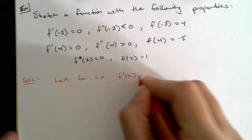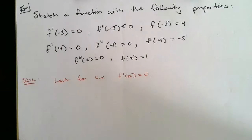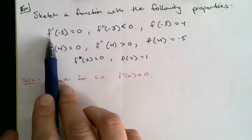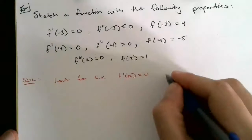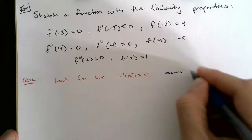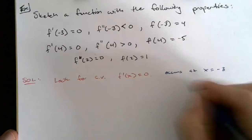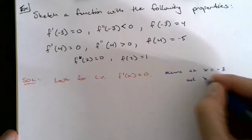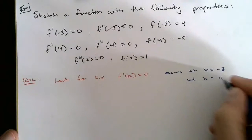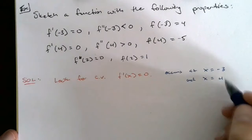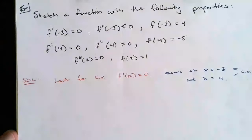If I'm looking for f'(x)=0, since they didn't tell us anything about where it's undefined, where does that occur? Well, f'(x)=0 when f'(-3)=0, so this occurs at x=-3, and at x=4, since f'(4)=0. So it occurs at x=-3 and x=4, and these are the critical values we're going to use.